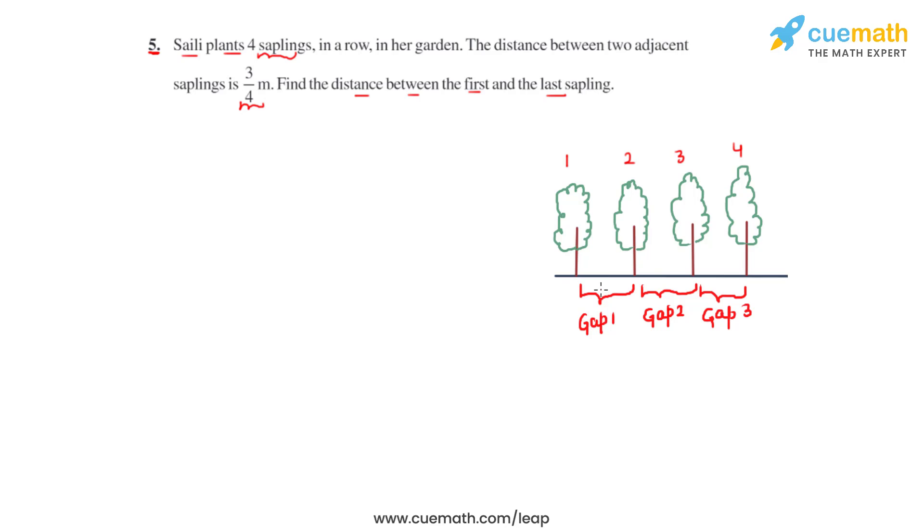Now between these four saplings there are three gaps. Gap 1, gap 2 and gap 3. And as given in the question we know that the length of one gap is 3 over 4 meters.